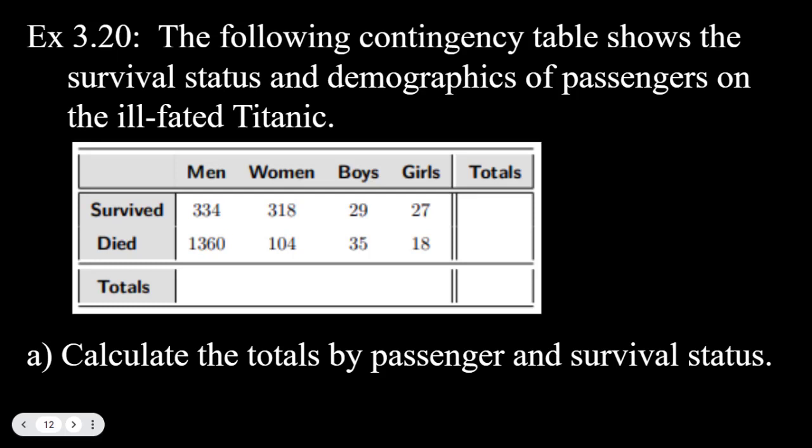So all we're doing here is we're adding up the rows. Notice the two categories that are used here are survived and died, and then that is broken up into other subcategories. First of all, 334 plus 1360 for the first group is going to be 1694.